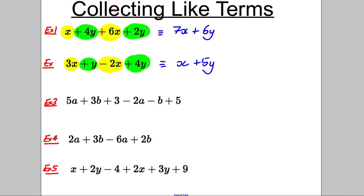Example three. Highlight everything with A's in it first. We've got a 5A, subtract 2A and that's it. With B's, we've got a positive 3B, take away a B and numbers, we've got number terms of positive 3 and a positive 8. Let's collect like terms. 5A, add 5A, take away 2A is equal to 3A. 3B, take away a B is equal to 2B and 3 add 5 is equal to 8.